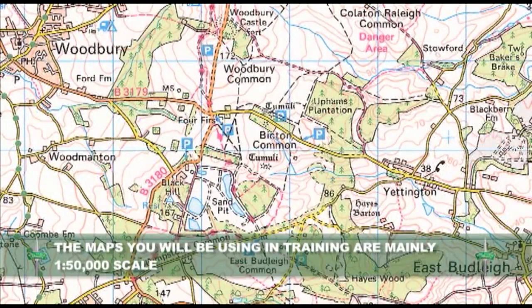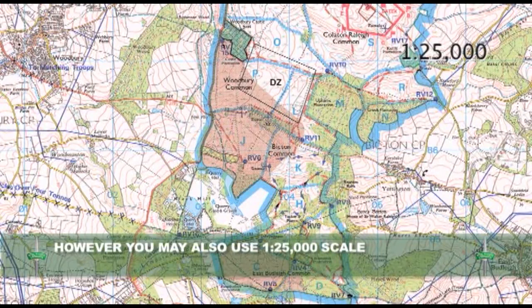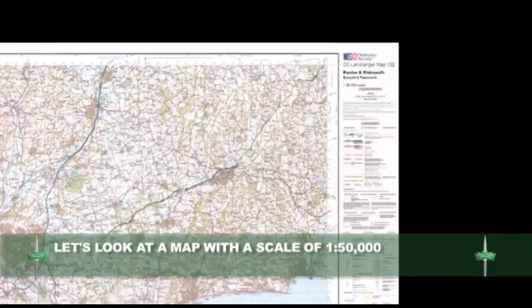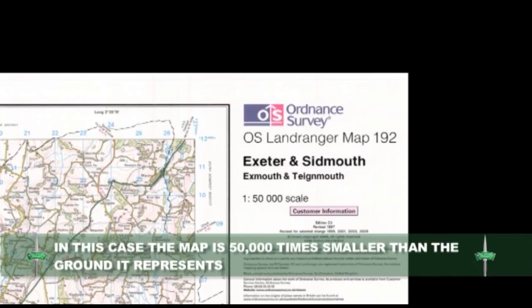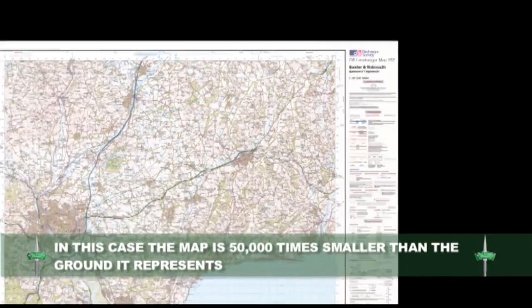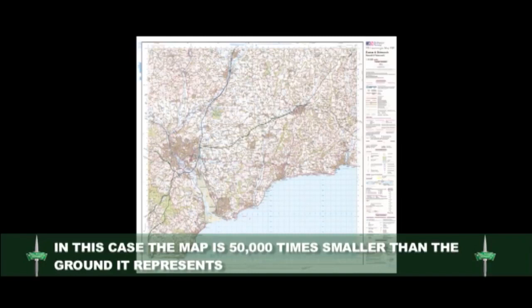The maps you will be using in training are mainly 1 to 50,000 scale, however you may also use 1 to 25,000 scale. Let us look at a map with a scale of 1 to 50,000. Therefore, in this case, the map is 50,000 times smaller than the ground it represents.